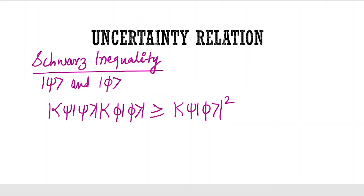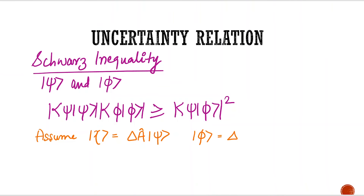Let's begin the derivation. We assume two states: |ξ⟩ = ΔA|ψ⟩ and |φ⟩ = ΔB|ψ⟩, where ΔA and ΔB are the uncertainty operators. We then apply Schwarz's inequality to these two states.